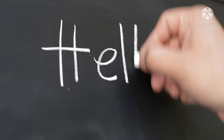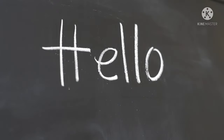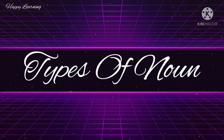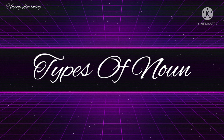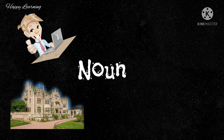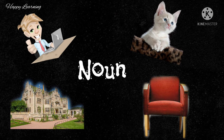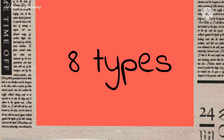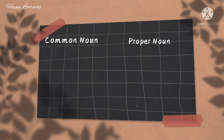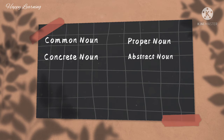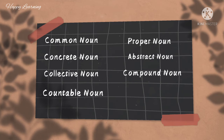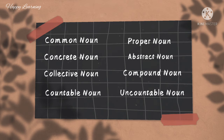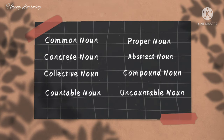Hello there everybody, welcome back to my channel. This video is going to be an extension of the previous one on the types of noun. We know that nouns are naming words — they name a person, place, animal, or thing. We are going to discuss the most common eight types of noun: common noun, proper noun, concrete noun, abstract noun, collective noun, compound noun, countable noun, and uncountable noun.